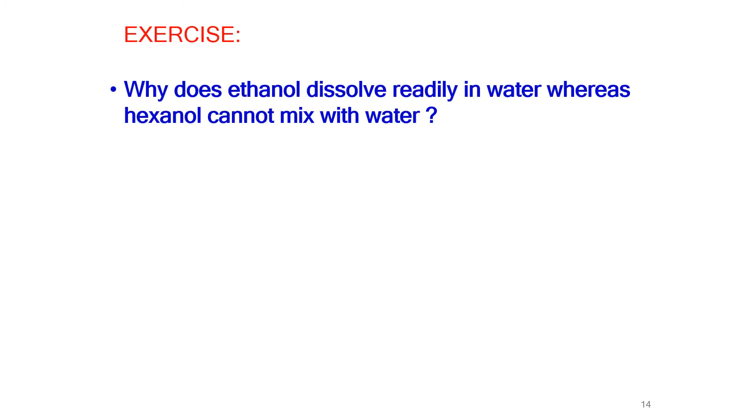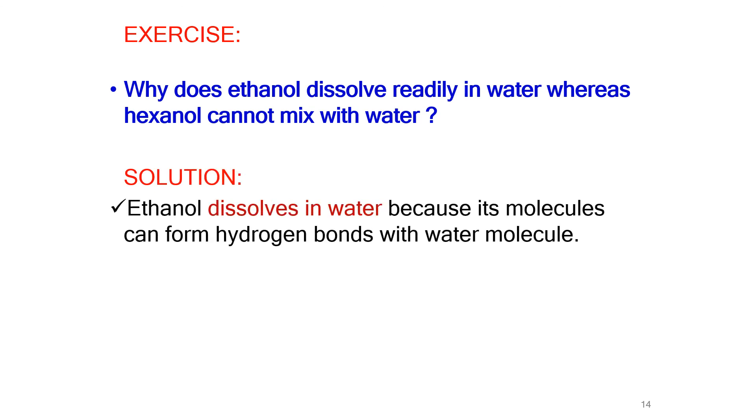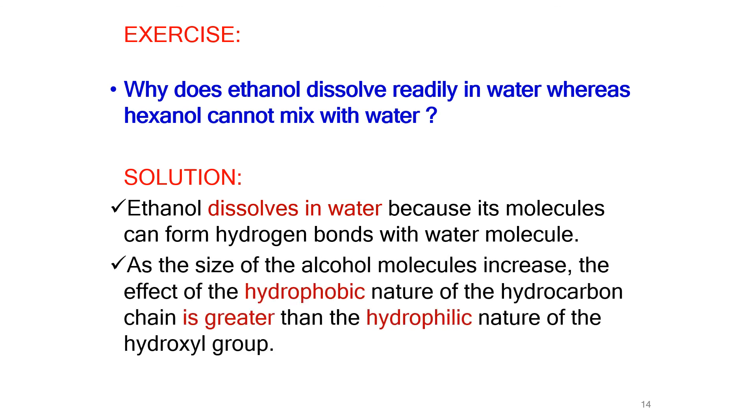Exercise: Why does ethanol dissolve readily in water whereas hexanol cannot mix with water? The solution is, ethanol dissolves in water because its molecules can form hydrogen bonds with water molecules. As the size of the alcohol molecules increase, the effect of the hydrophobic nature of the hydrocarbon chain is greater than the hydrophilic nature of the hydroxyl group.